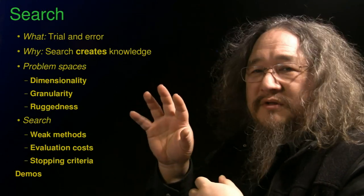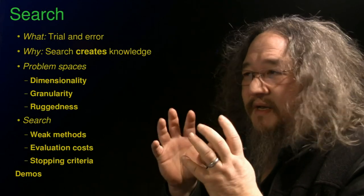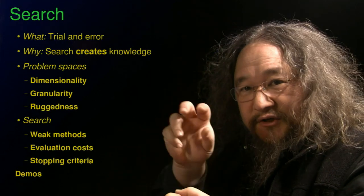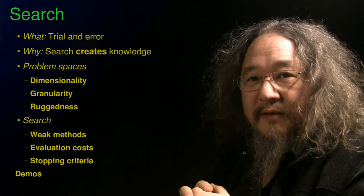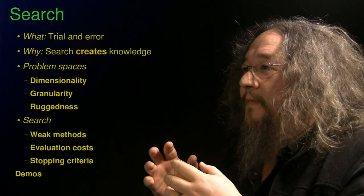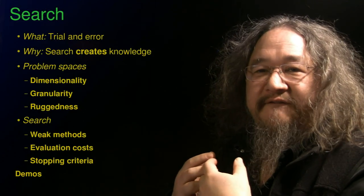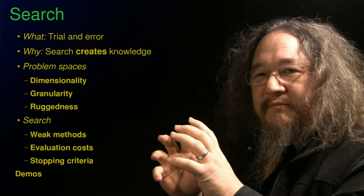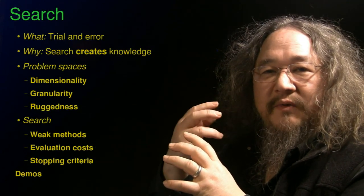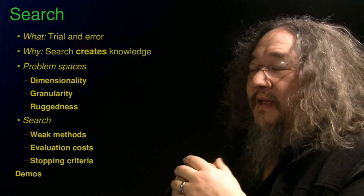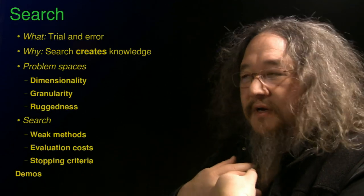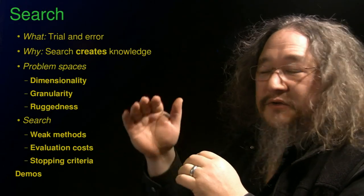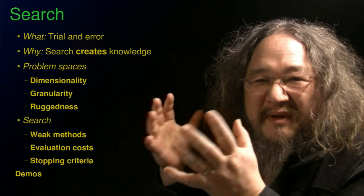The way we look at search has two basic parts. It has the problem space, which is the thing that you are searching, and then it has a searcher, which is a method of moving through the problem space. A problem space, for our purposes, is basically a function. You have some unknown function, you're giving it a bunch of inputs, and you get back a number, an evaluation, a score. Your job as a searcher is to find the combination of inputs that will produce the best score — or if not the best score, maybe some good enough score, depending on the problem.